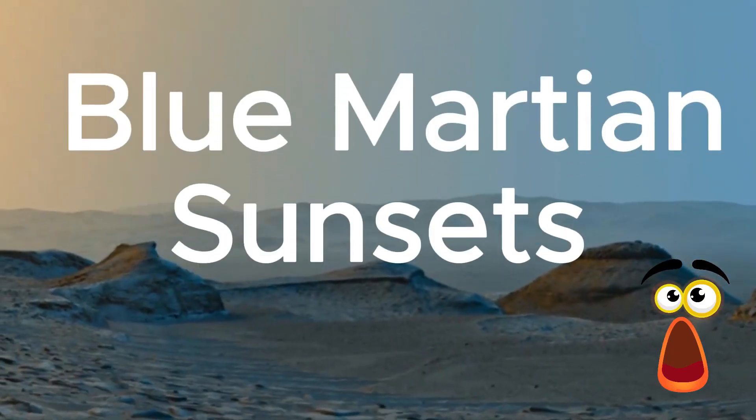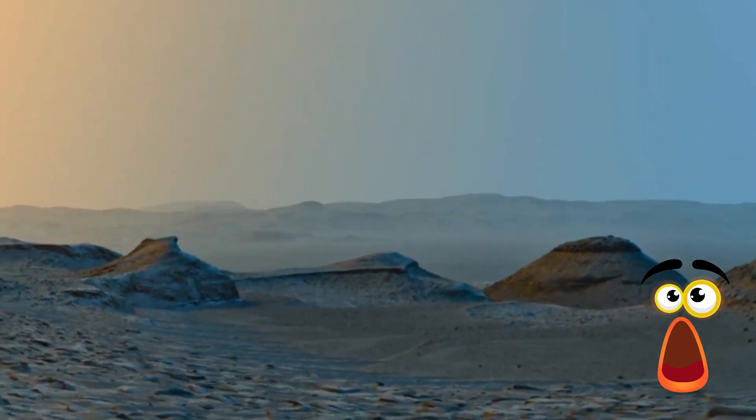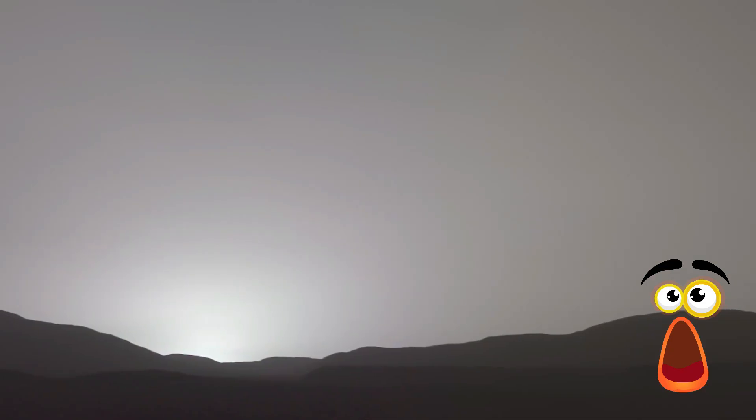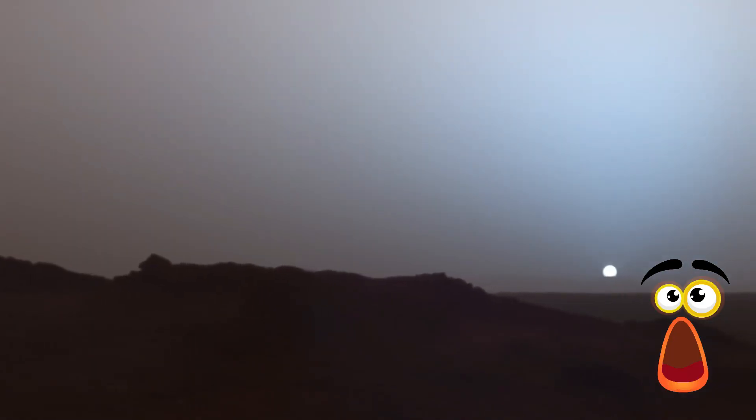Fact 3: Blue Martian Sunsets. Despite its fragility, the Martian atmosphere is vital to the planet's color, particularly during sunrise and sunset. Rayleigh scattering is the process that gives Martian sunsets their blue hue. It happens when sunlight enters the atmosphere of a planet and interacts with the molecules there.